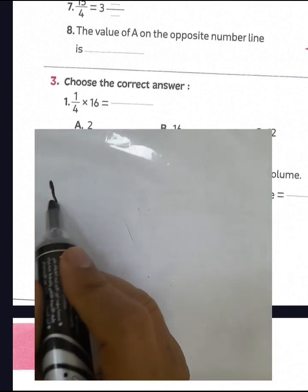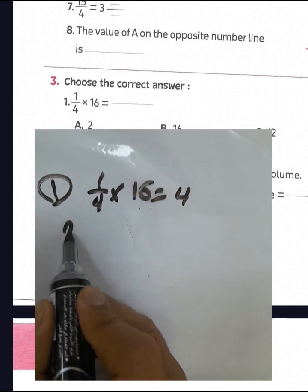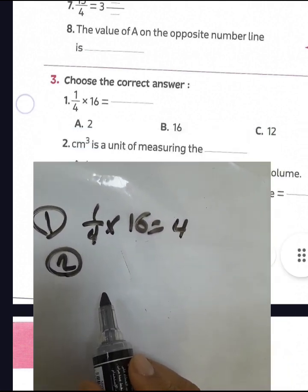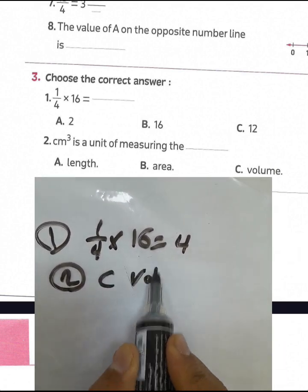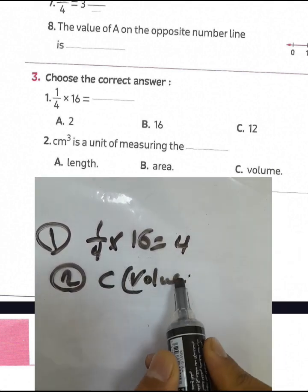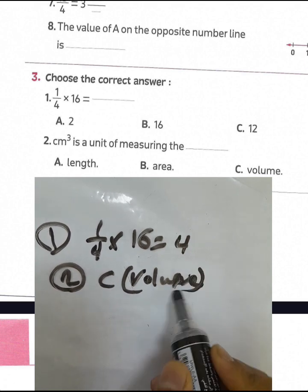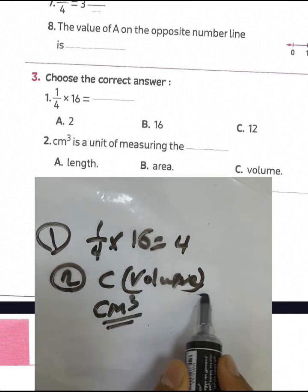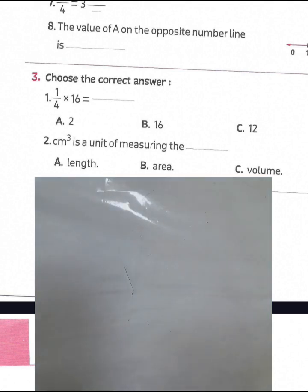Number 1: one quarter of 16 — meaning 16 divided by 4 equals 4. Question number 2: cubic centimeter is the unit of volume — choose letter C. The area uses square centimeters, and length uses centimeters only.